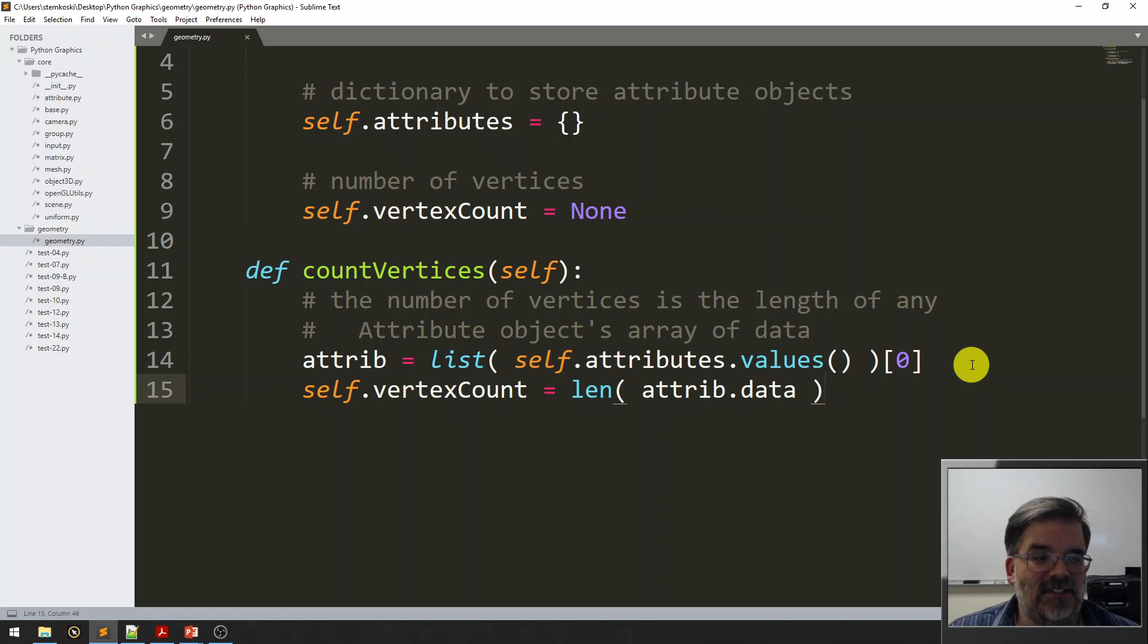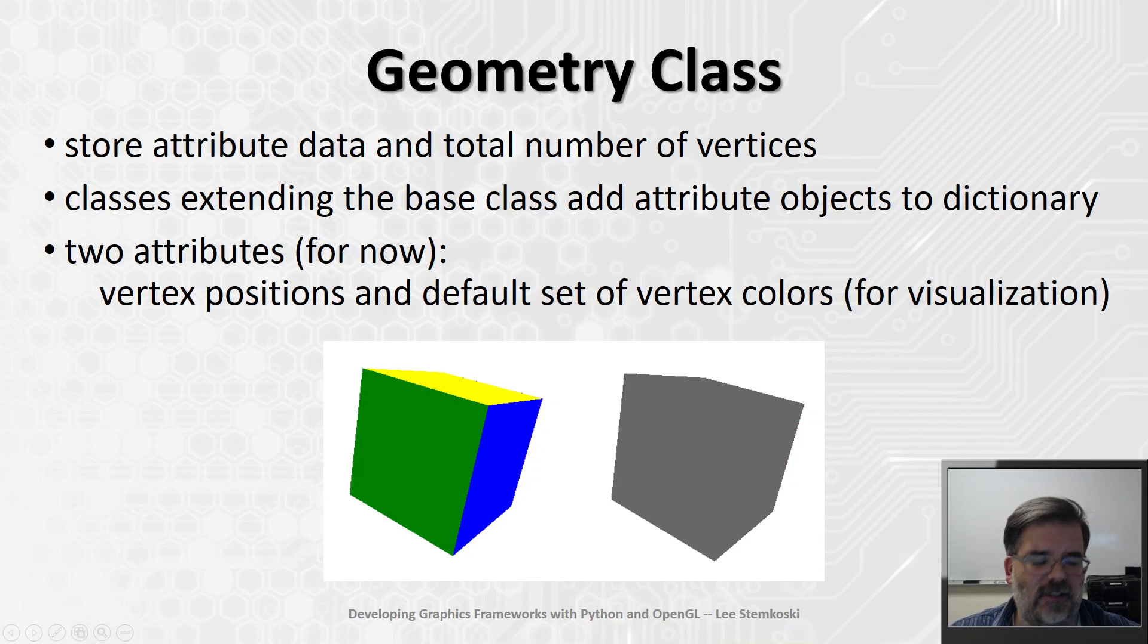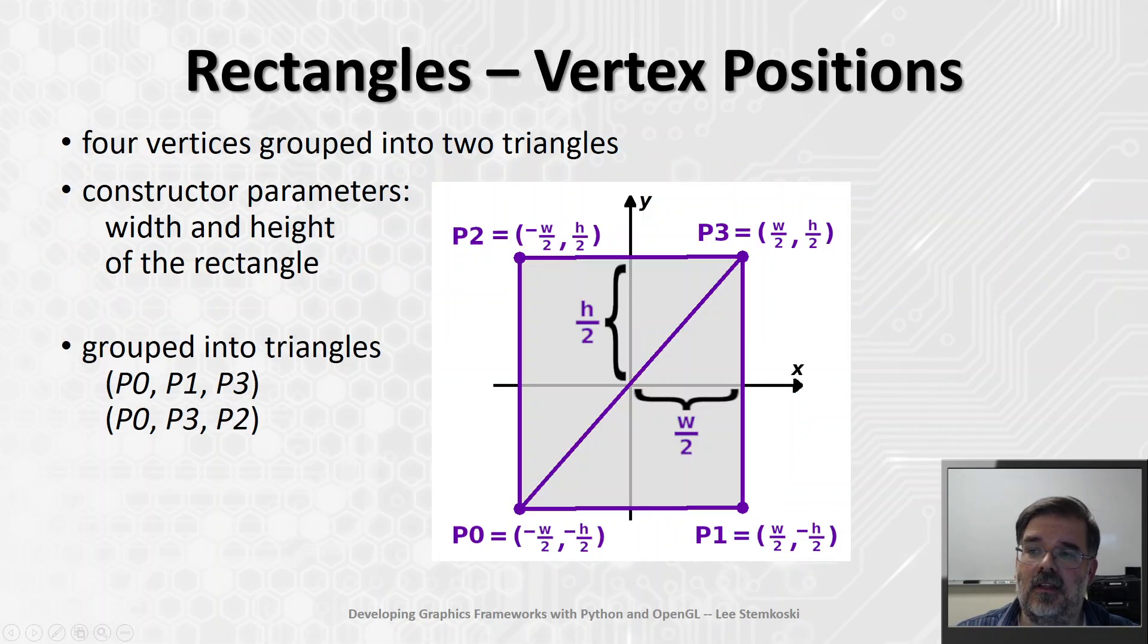But it would be really helpful to see an example of how we're going to use this class. So next let's talk about rectangles. They're basically the simplest object that you can render other than a triangle, I guess. A rectangle is made up of four vertices, and we're going to group those into two triangles.